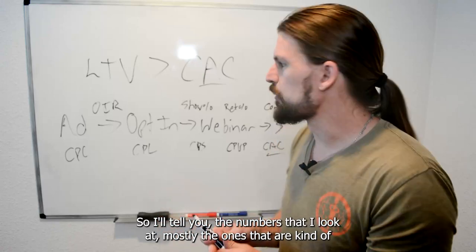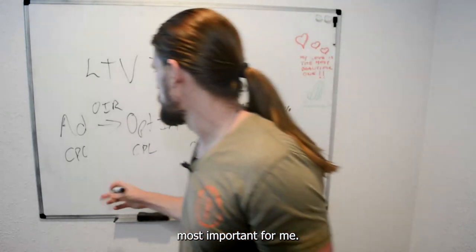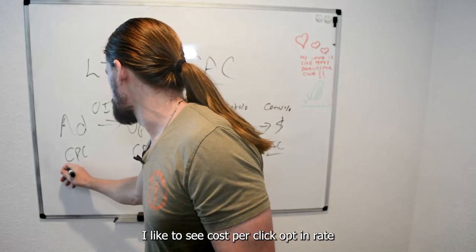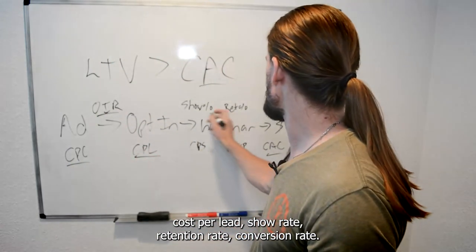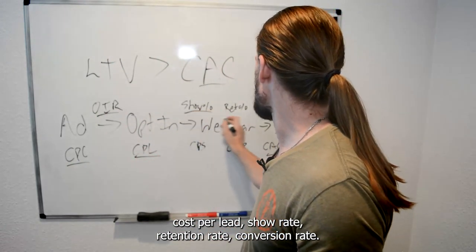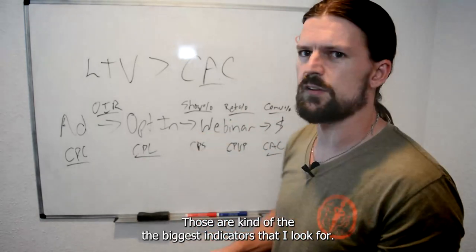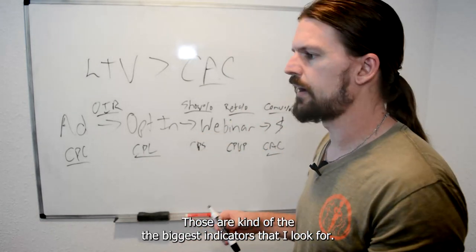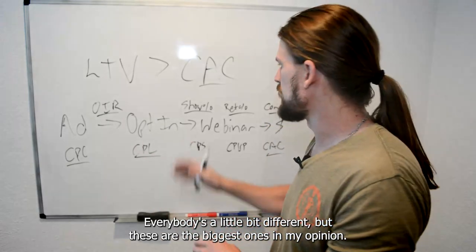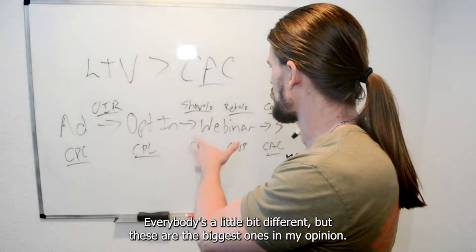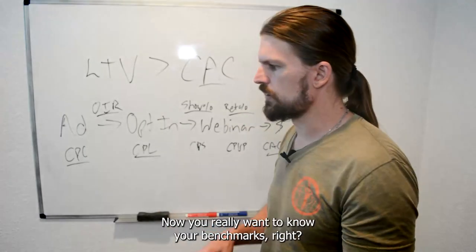The numbers I look at most are: cost per click, opt-in rate, cost per lead, show rate, retention rate, and conversion rate. Those are the biggest indicators for me — that's kind of personal preference, but in my opinion these are the most important ones, especially for a webinar funnel.